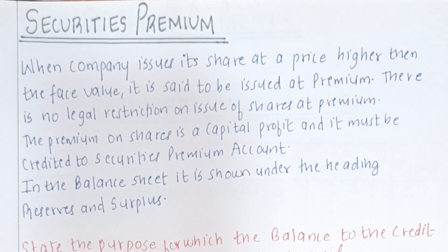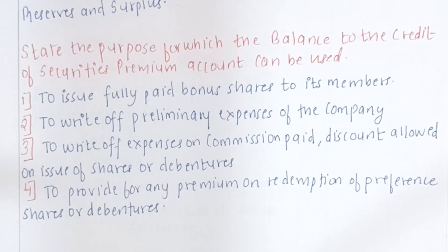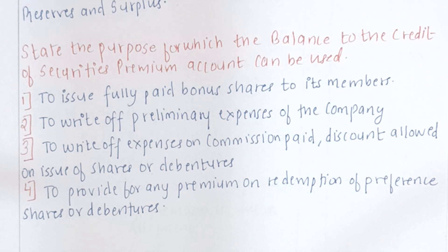There are certain purposes for which the securities premium account can be used. First, to issue fully paid bonus shares to its members. Second, to pay off the preliminary expenses of the company. Third, to pay off expenses on commission paid or discount allowed on issue of shares or debentures. And also, to provide for any premium on redemption of preference shares or debentures.